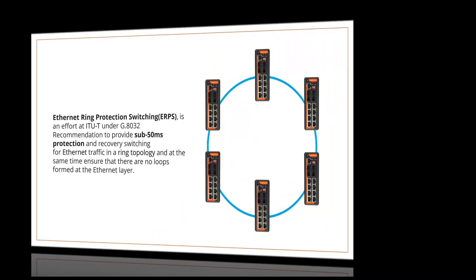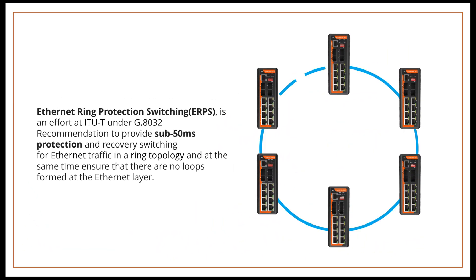Ethernet ring protection switching is an effort at ITU-T under the G.8032 recommendation to provide sub-50ms protection and recovery switching for Ethernet traffic in a ring topology while ensuring that there are no loops formed at the Ethernet layer.